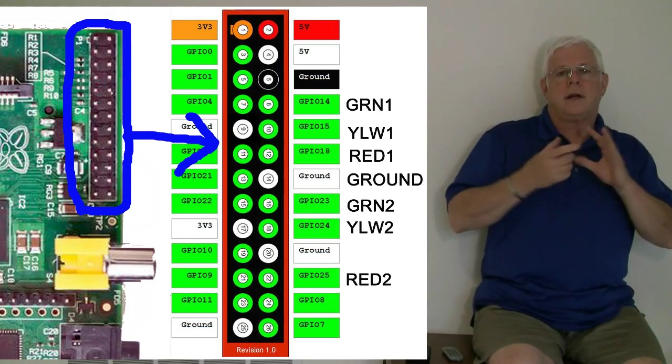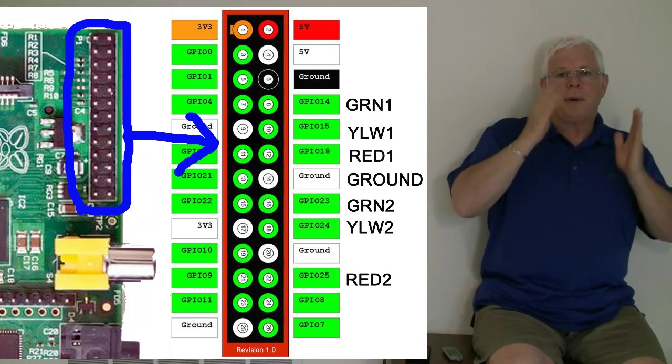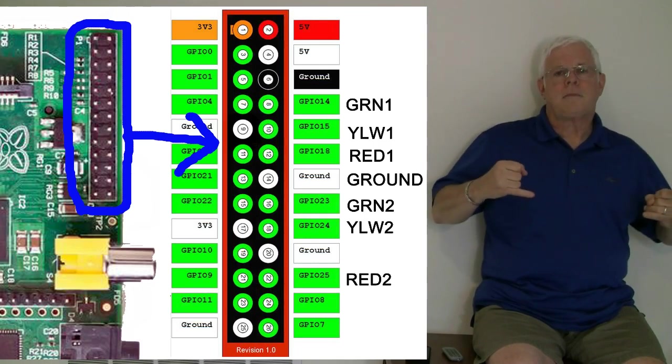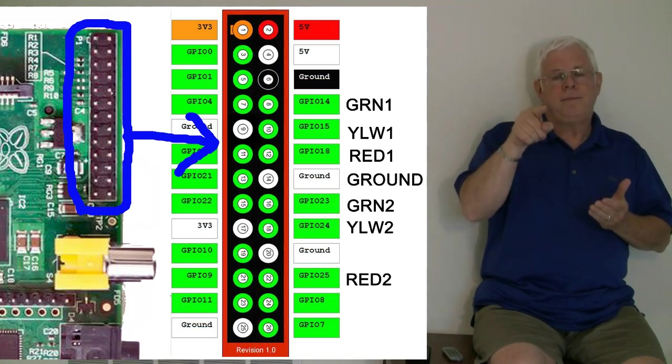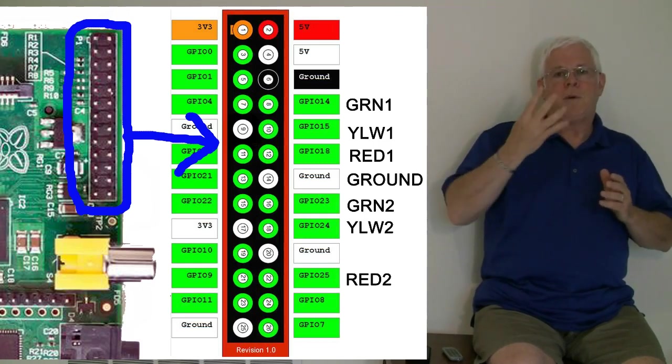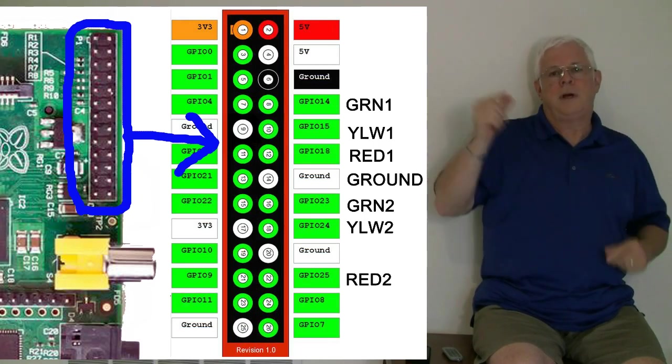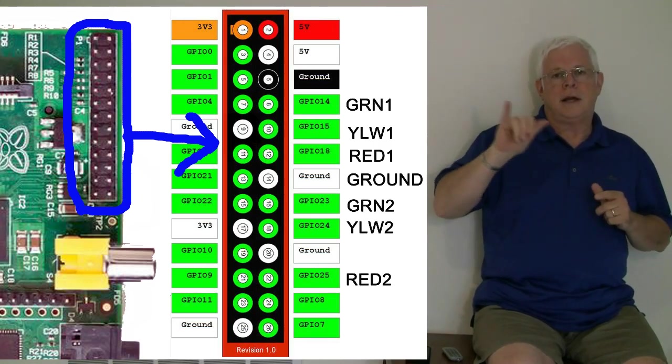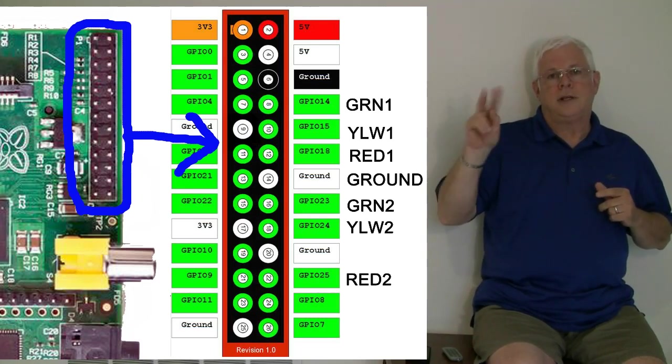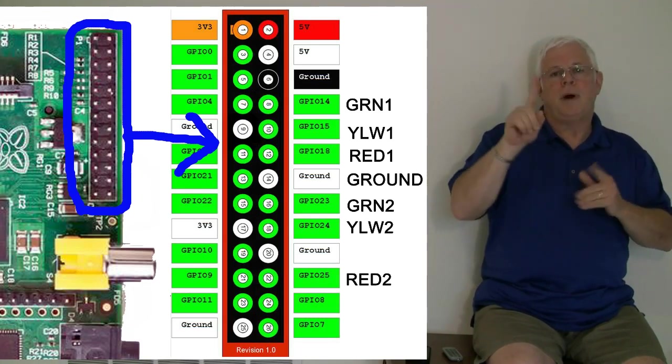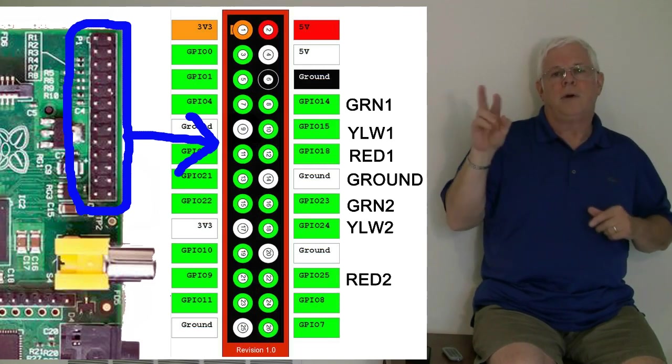Let's start connecting the computer jumper cables. We're going to only connect the female ends for now. Start with the fourth pin to the green one, then the yellow one, then the red one, then our ground, then the green two, then yellow two, and then we're going to skip one pin, and then red two.